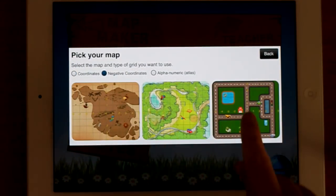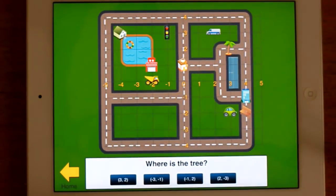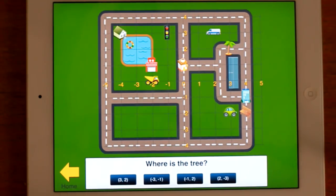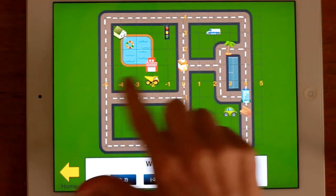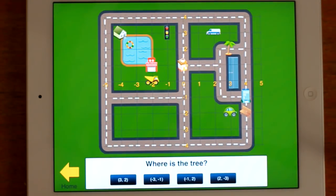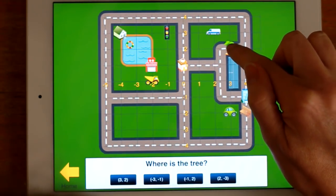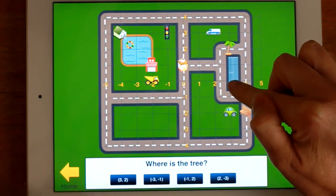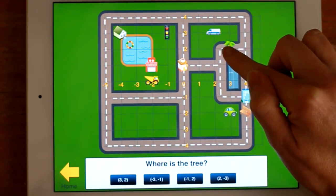Okay, we're picking negative coordinates. Picking the same map, but I'll show you the other maps later. Where is the tree? So you notice that this time the coordinates are there in the four quadrants. Where is the tree? There it is, just there. So that's across then up. So it's at 3,2.